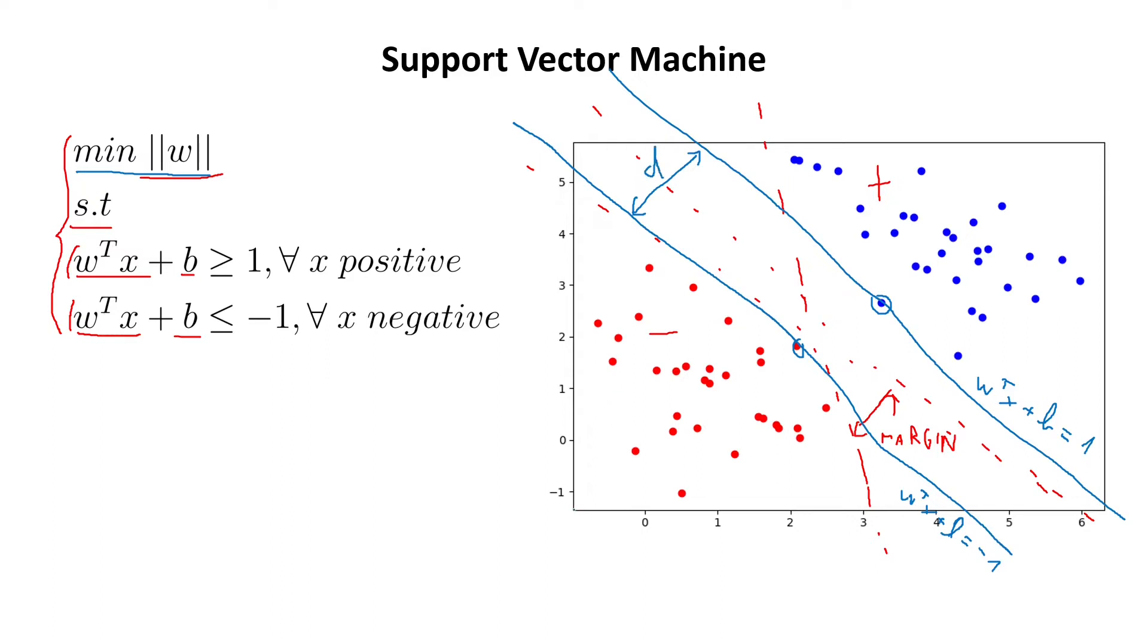And how do we do that? Basically, we take this vector here. Okay, this is the x minus. And we also take this vector here. Okay, which is x plus. And basically, here, the distance between the two is x plus minus x minus. And now, let's try to maximize the margin and see what we can derive from there.